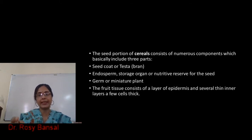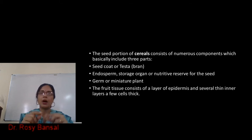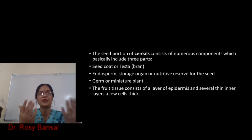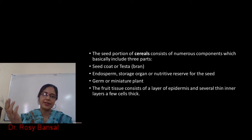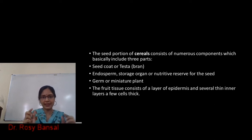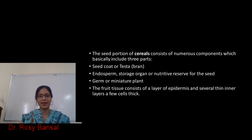The seed portion of the cereal consists of numerous components, but basically there are three parts. One is the seed coat — the outer bran layer, also called testa. Then the endosperm — the mealy part which we consume. This is the storage organ or the nutritive reserve for the seed. Then there is the germ, the miniature plant part which helps in germination.